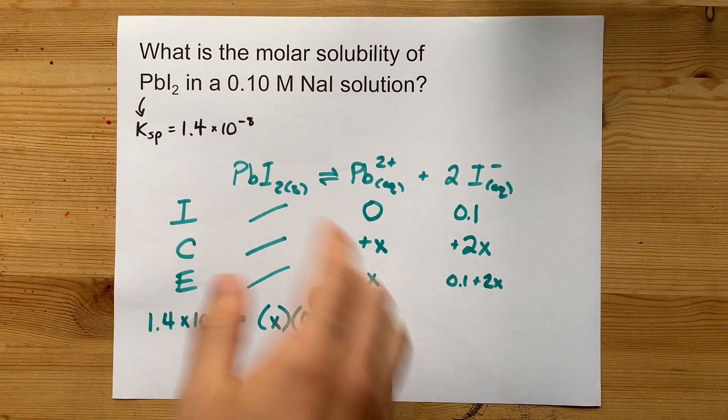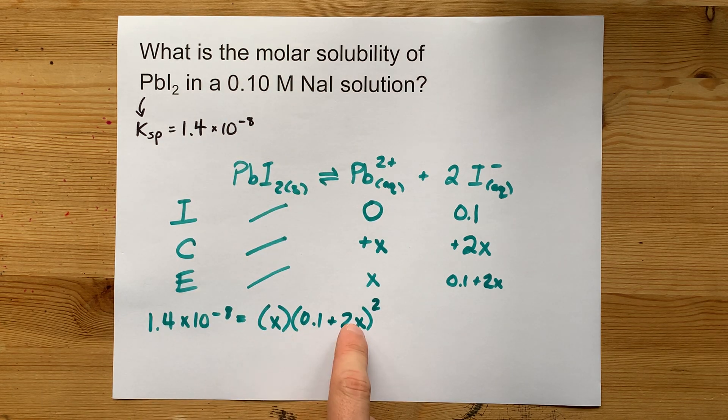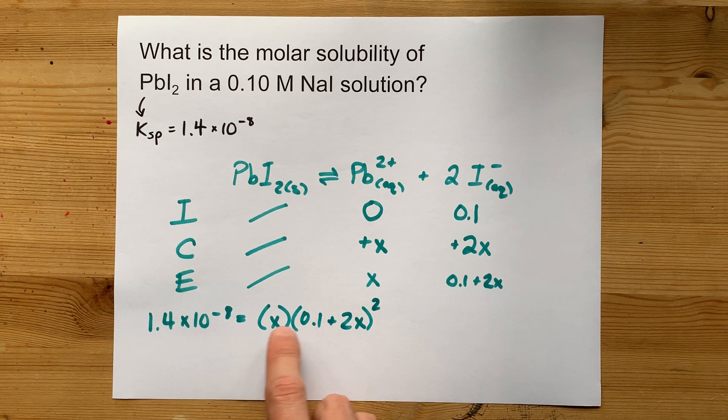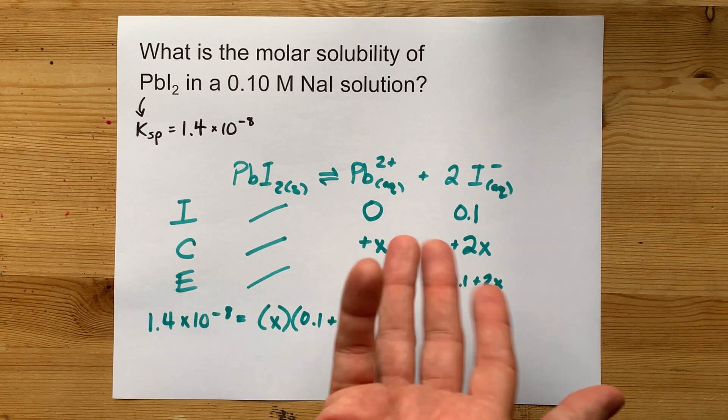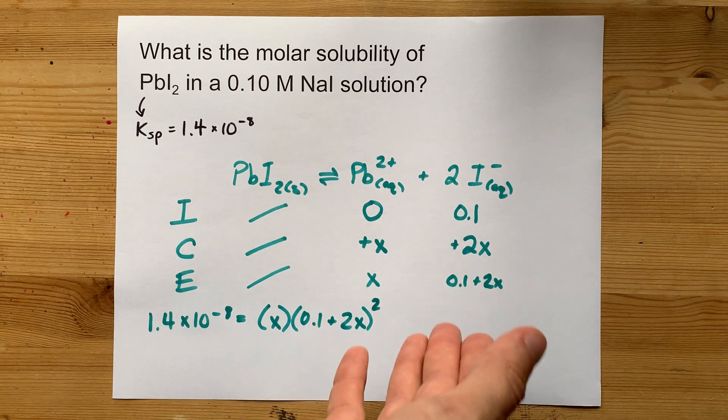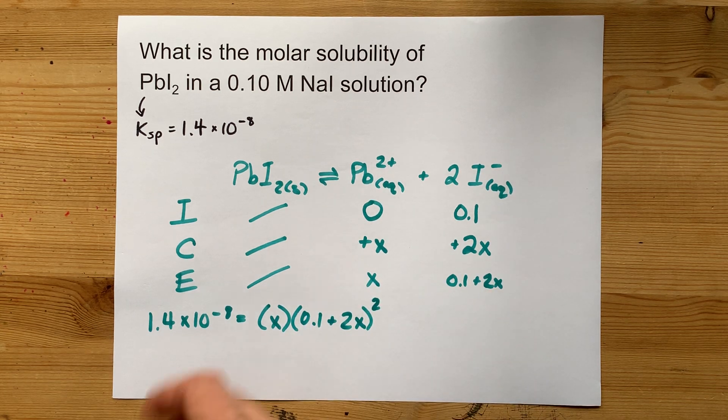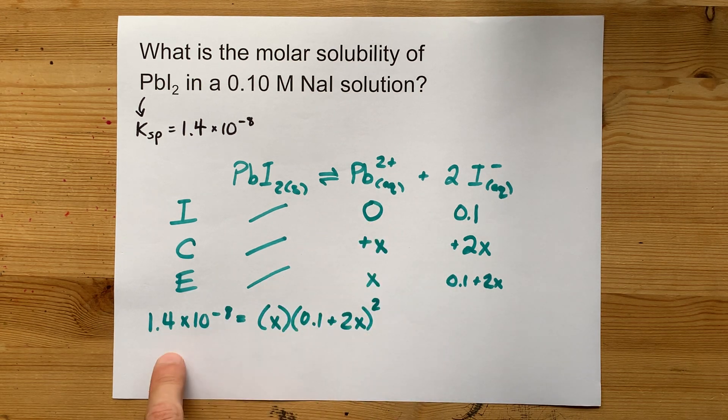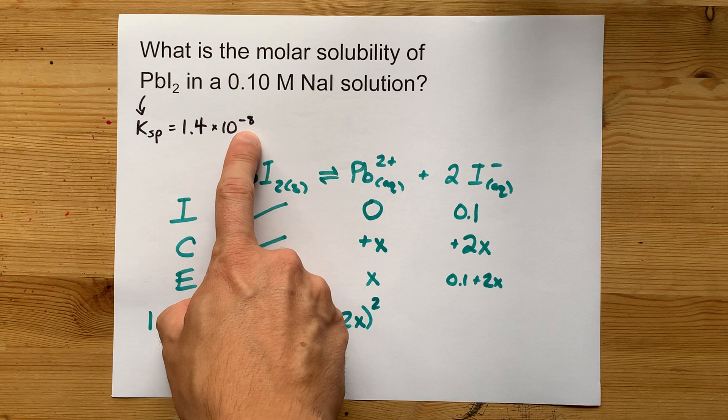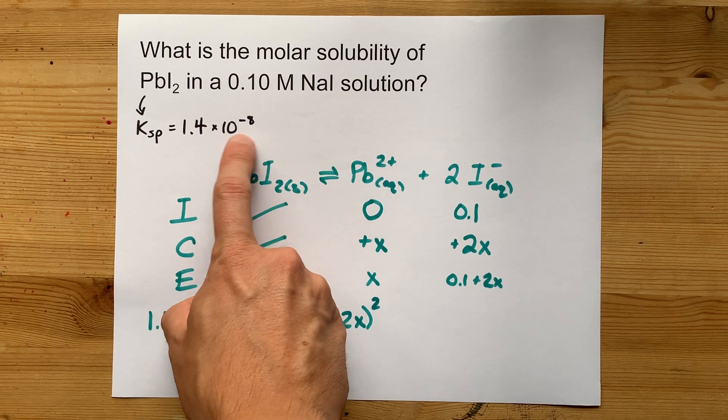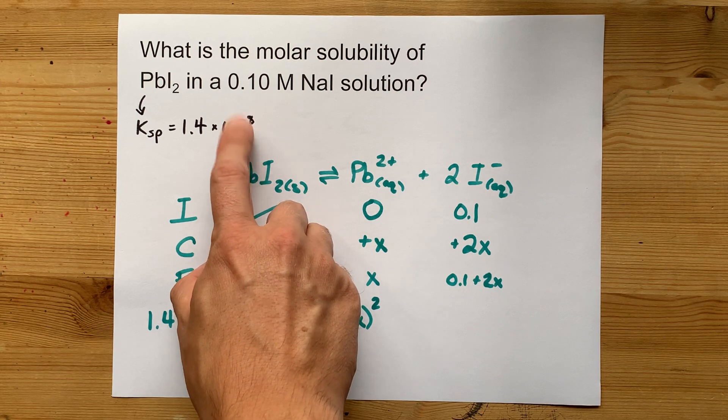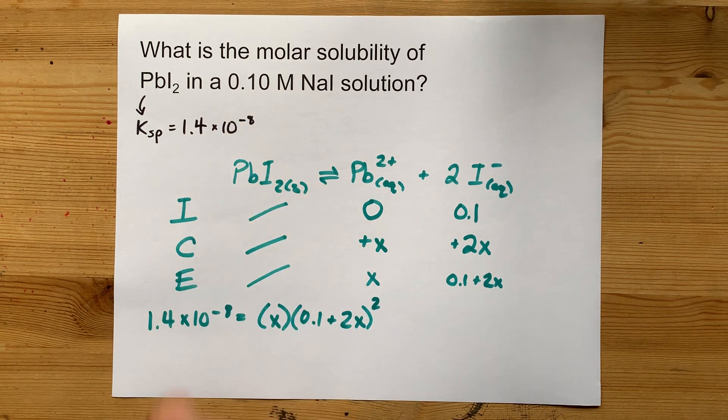Your job to find the molar solubility is to solve for X in this equation. Now, if you multiply this out, you're going to end up with like a 4X³, etc. I can't solve cubic equations without some kind of calculator. It would be really nice if we had a way to simplify this. Because Ksp is pretty small—I judge it by 10 to the negative 5 is small enough, and this is even more significant at negative 8.